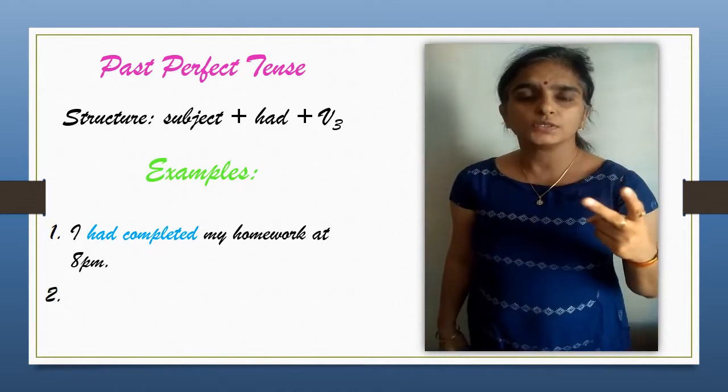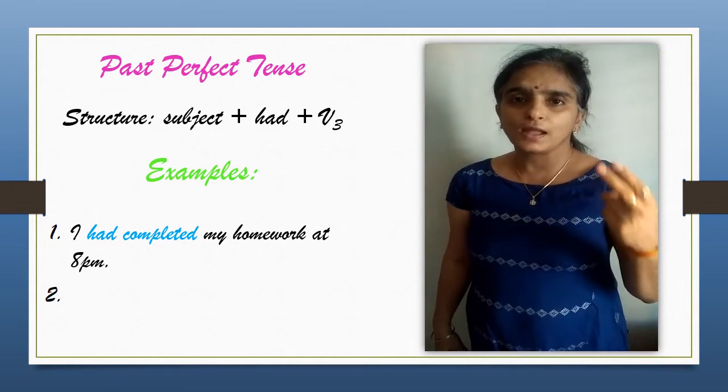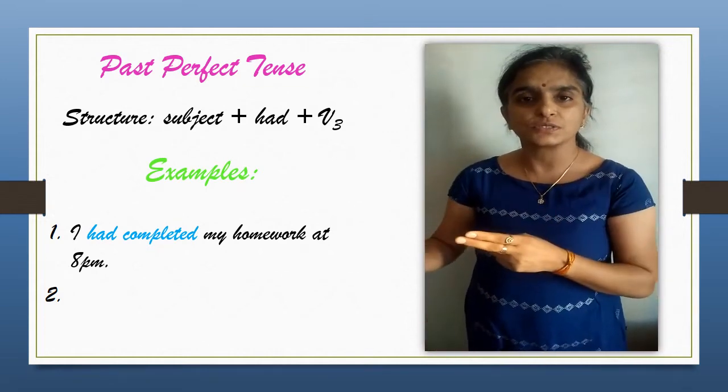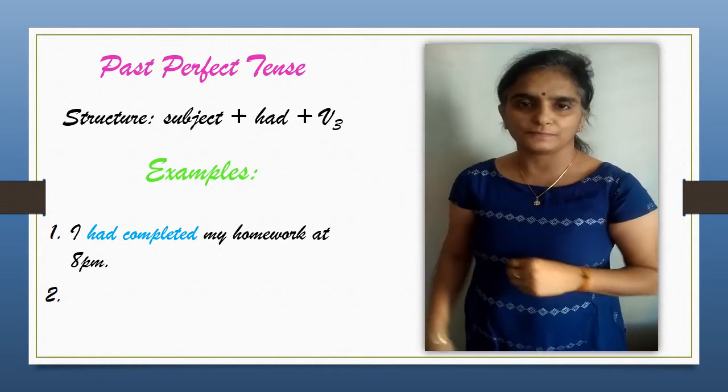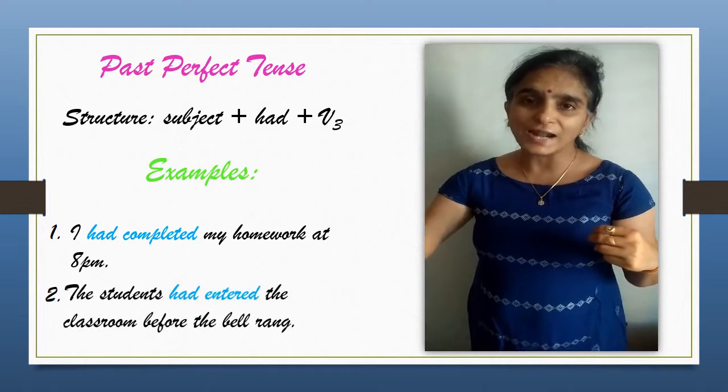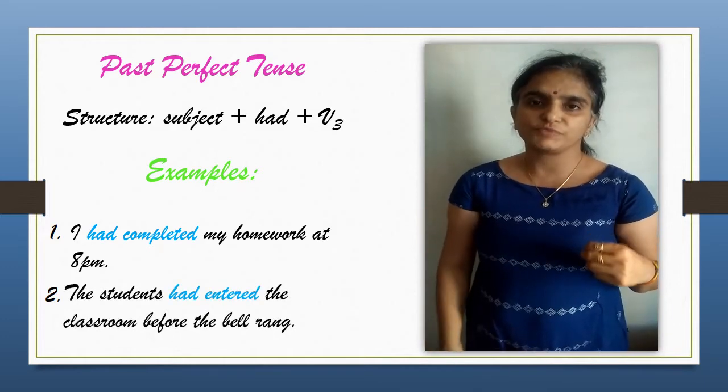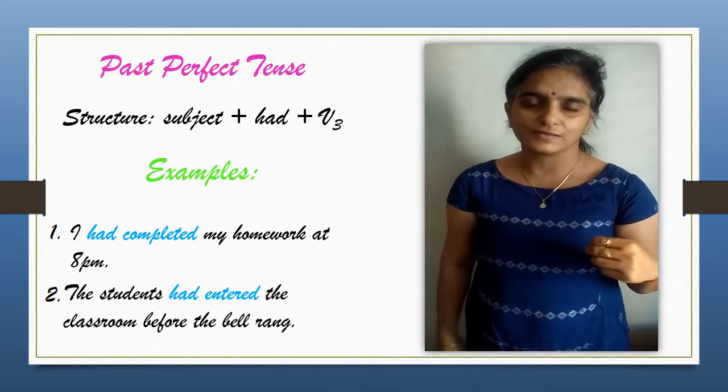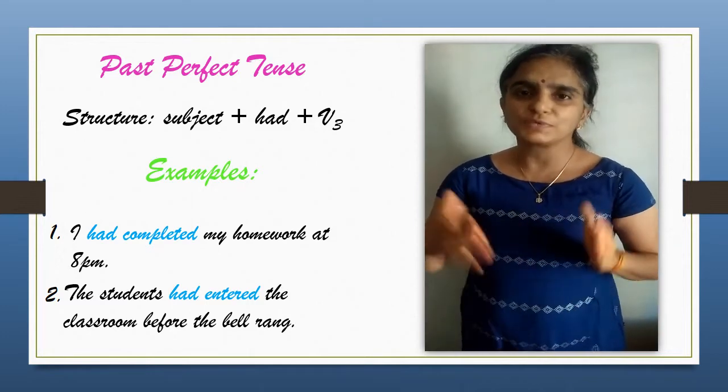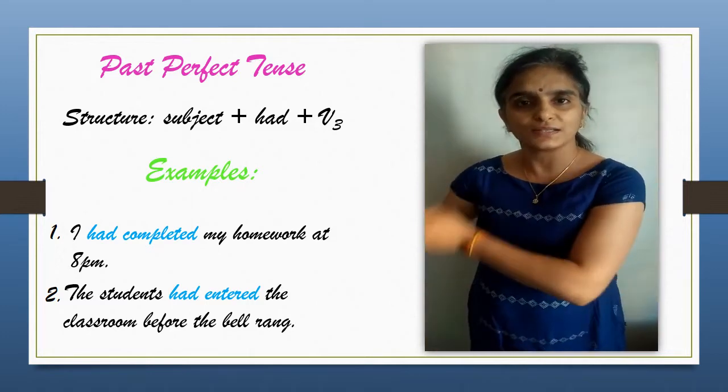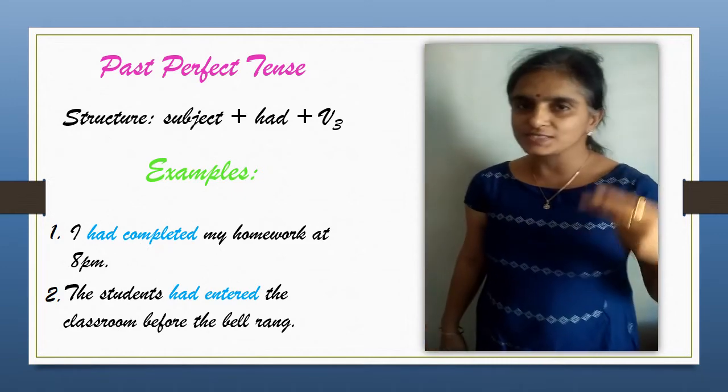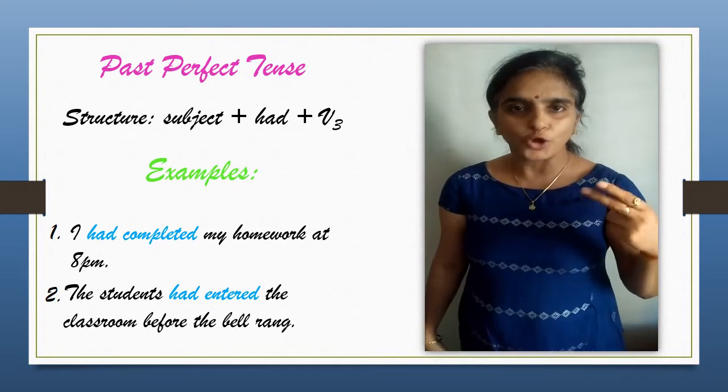Instance two: used to describe a completed action before another action in the past began. For example, the children had entered the classroom before the bell rang. Here, you would have seen the completed action has been mentioned before another action began. I hope these two instances are understood to all of you.